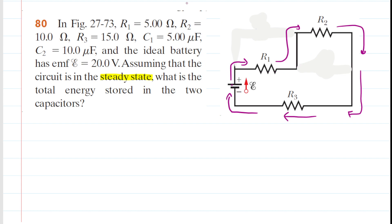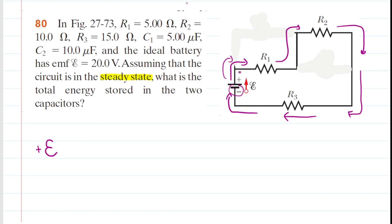We'll start at the negative terminal of the battery and work our way clockwise around the circuit until we return back to that negative terminal. As we go around clockwise, we'll keep track of the potential changes. When we look at the battery, we're moving from the negative plate to the positive plate, so we gain potential equivalent to the potential produced by the battery — a positive change equal to the EMF, symbolized by the Greek letter.